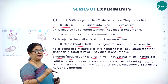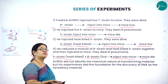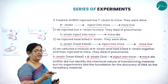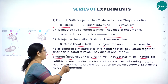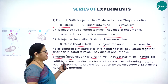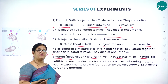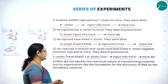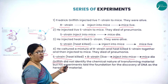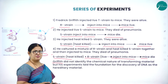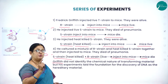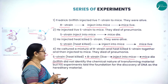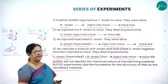With this experiment he was able to prove that R-strain was transformed into S-strain — that genetic material called DNA was transferred from S-strain to R-strain, making R-strain which was non-virulent into virulent, thereby killing the mice. Griffith did not identify what material brings about the transformation, but he laid the foundation for the study that DNA is the hereditary material.